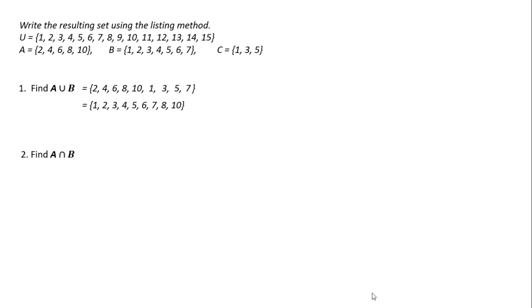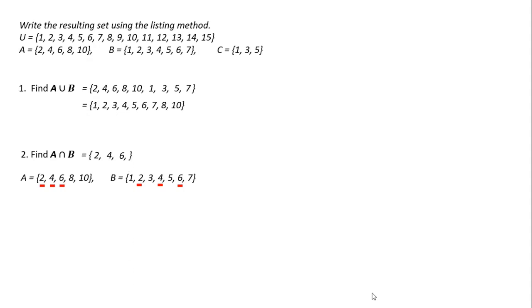Now find A intersection B. That symbol means we want to find the elements that are in A AND in B. We have the two that is in both A and B, and the four that is also in both. We don't have a six in both — wait, sorry, there is a six in both. So our intersection of A and B would be just two, four, and six.